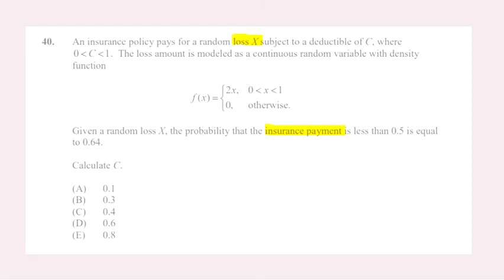This is question number 40. In this question, an insurance company pays for a random loss of X — right at the beginning, they're using the wording 'loss', so pay attention to that — subject to a deductible of C. The loss is modeled using the density function f(x), which is the total amount of damage done. Then the question says: given a random loss of X, the probability that the insurance payment is less than 0.5 is equal to 0.64. Here you really have to pay special attention because they start talking about the loss but then give information about the insurance payment.